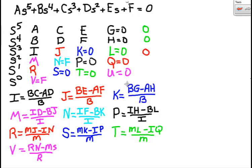V is equal to R N minus M S divided by R. But that value is F because the one upper right value is zero. F is above that zero.